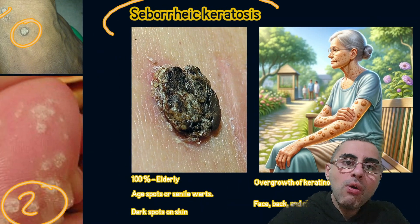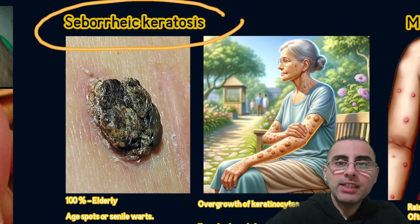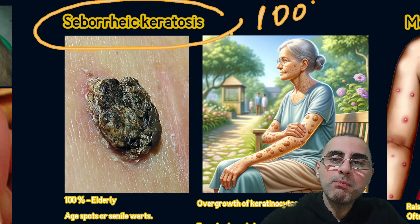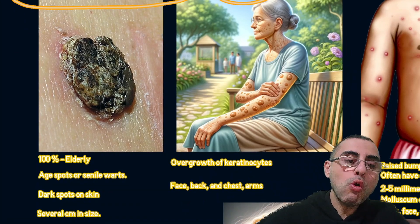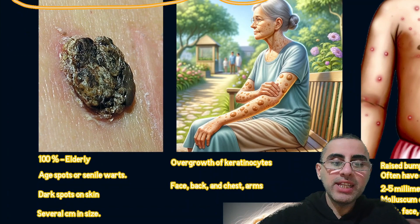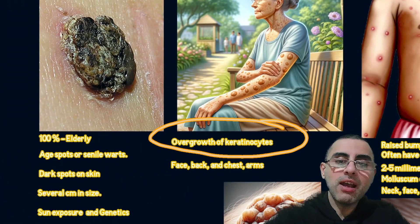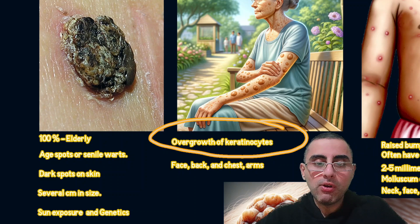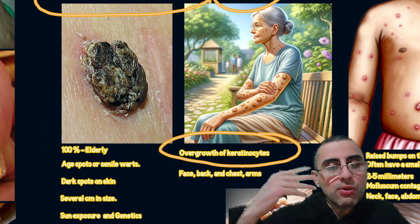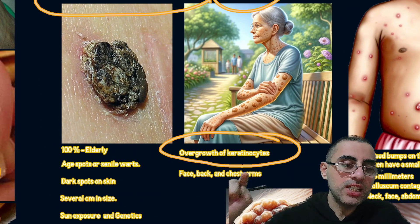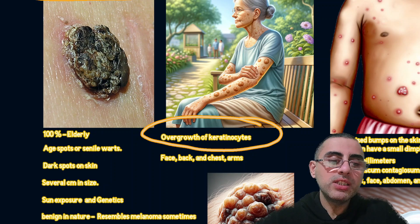The third most common cause of skin growth is seborrheic keratosis. It usually affects elderly people and in the elder population it affects around 100 percent, so it is a very common condition. It is also known as age spots or senile spots. It is an overgrowth of keratinocytes, which are a type of skin cell. It typically develops on the face, back, chest, and arms, and appears as dark spots on the skin.